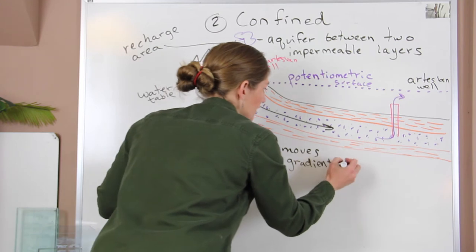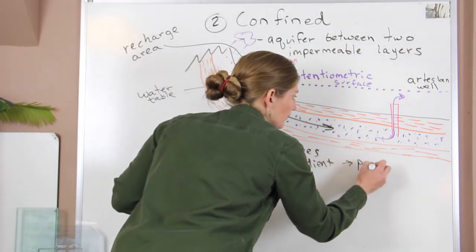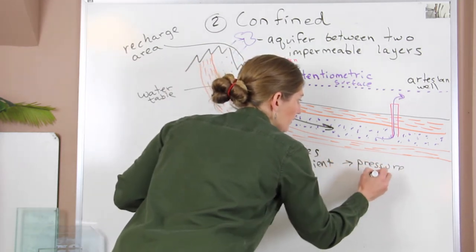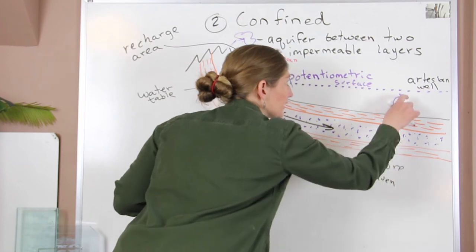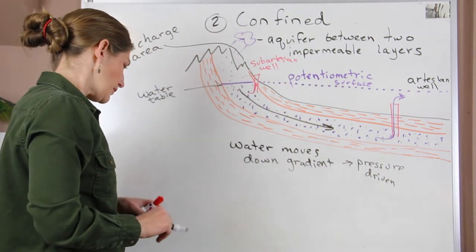So again, here the water in our confined aquifer is pressure-driven, so the water is going to move down gradient, and then it is pressure-driven, and it can lead to these artesian conditions.